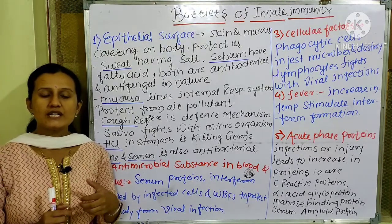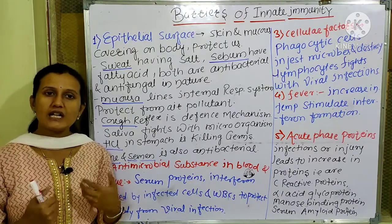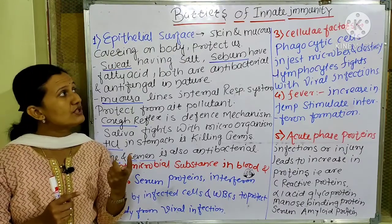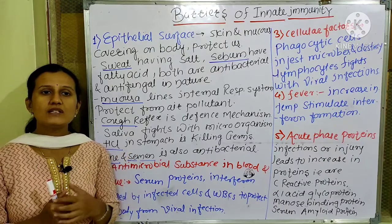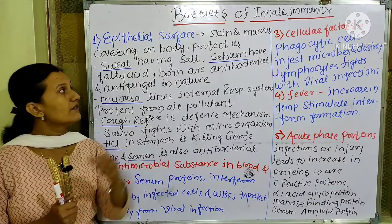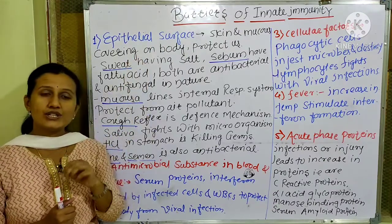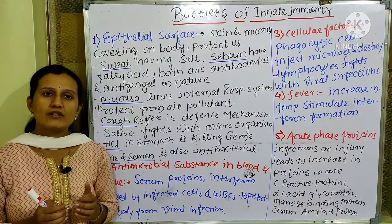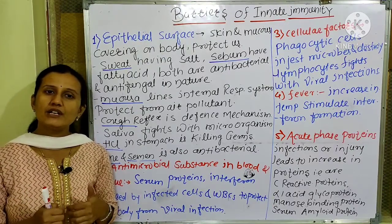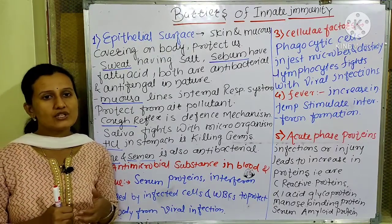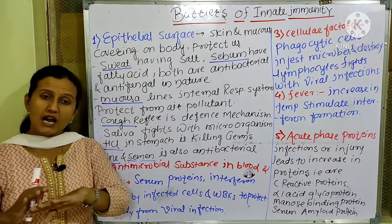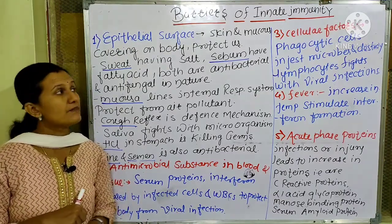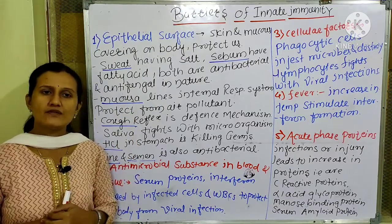Epithelial surfaces protect us from various infections. This is called the epithelial surface — the skin and mucus-secreting covering. The mucous covering is a small layer on the organs. When we have organs internally, we have epithelial surfaces, and they protect us from various infections.